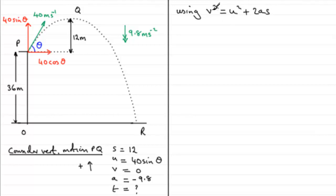What do we have? Well, v is going to be 0, so 0² equals u², that's 40 sine theta all squared, plus 2 times the acceleration, which is minus 9.8, times s, which is 12. And if we work this out, this term here comes to minus 235.2.